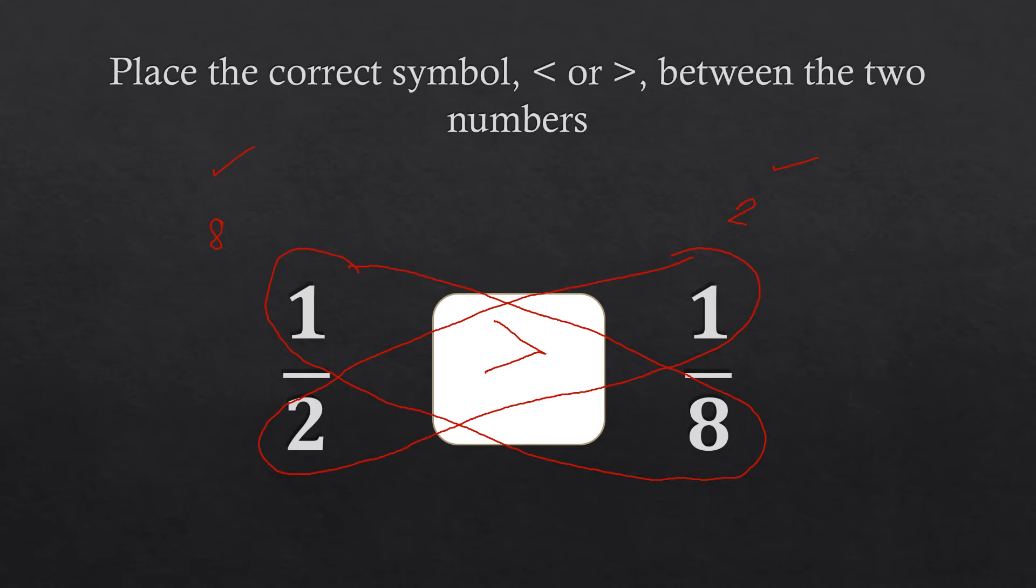Because again, if you try to look at the symbol here as the mouth of your crocodile, of course it will be eating up the bigger numbers. So the opening of your symbol must be on the bigger numbers. So this is now greater than. So we have one half greater than one eighth. So that is how you use your butterfly method.